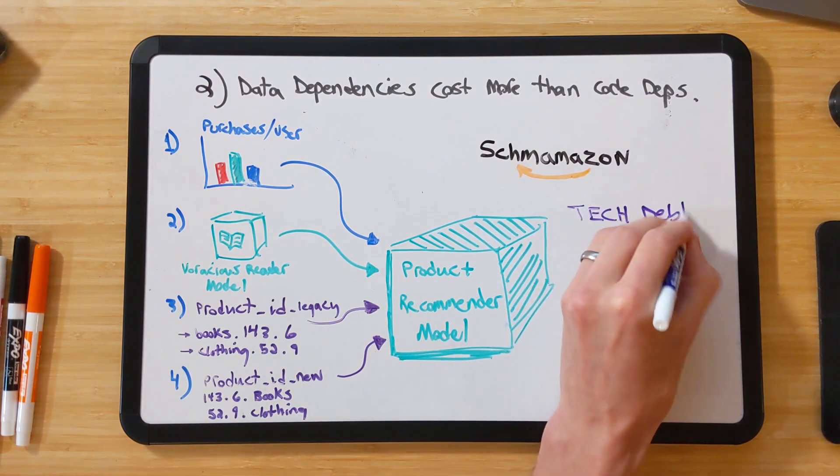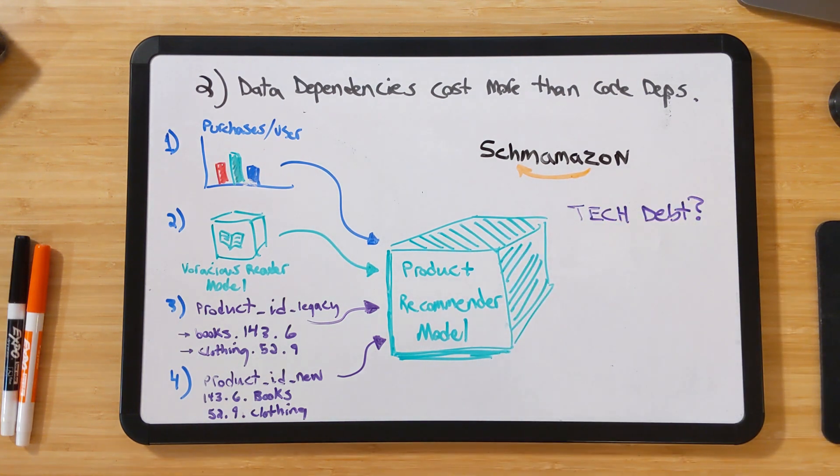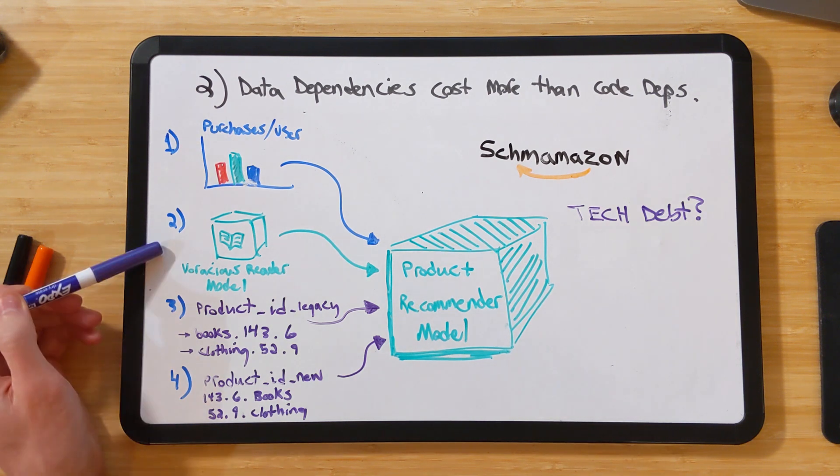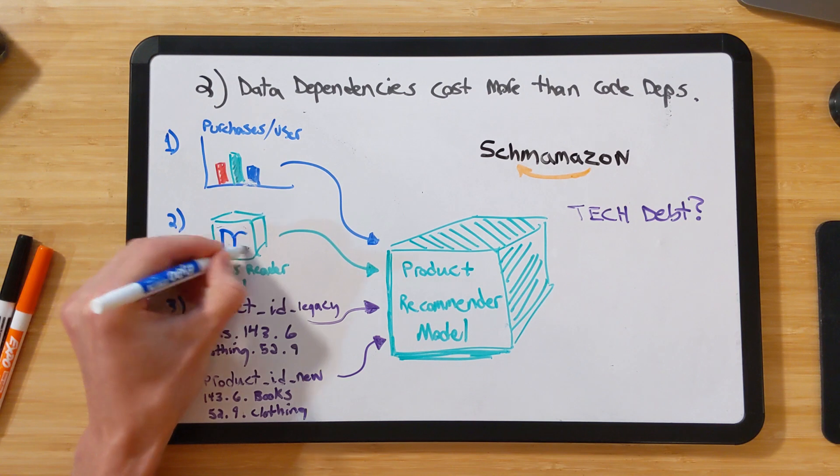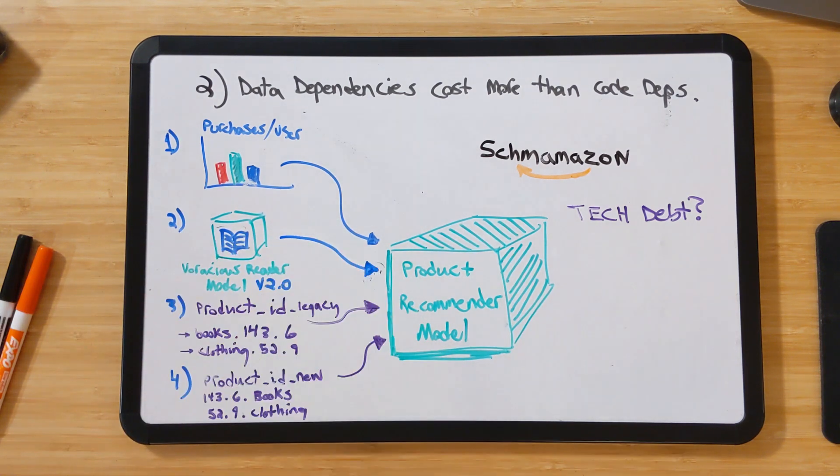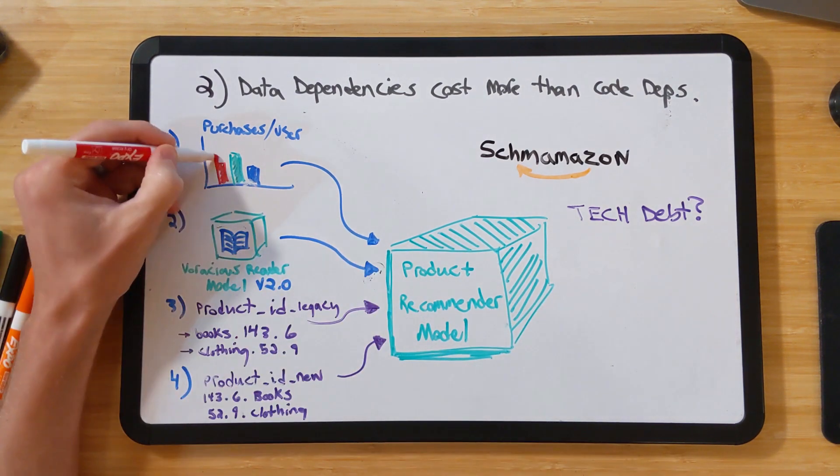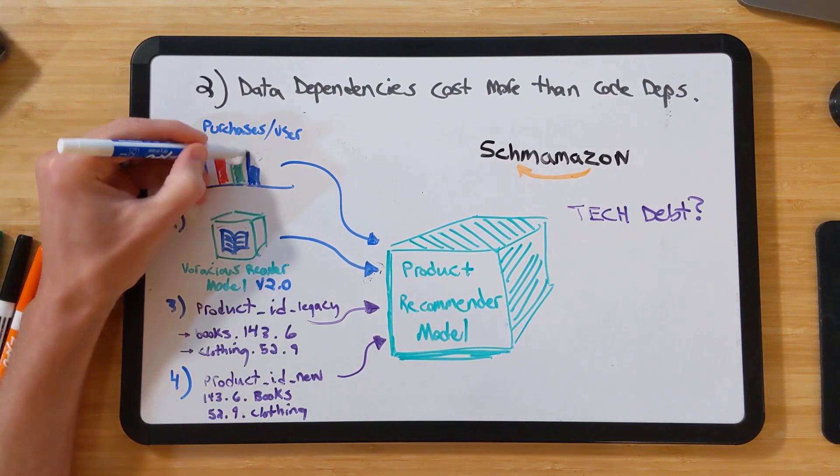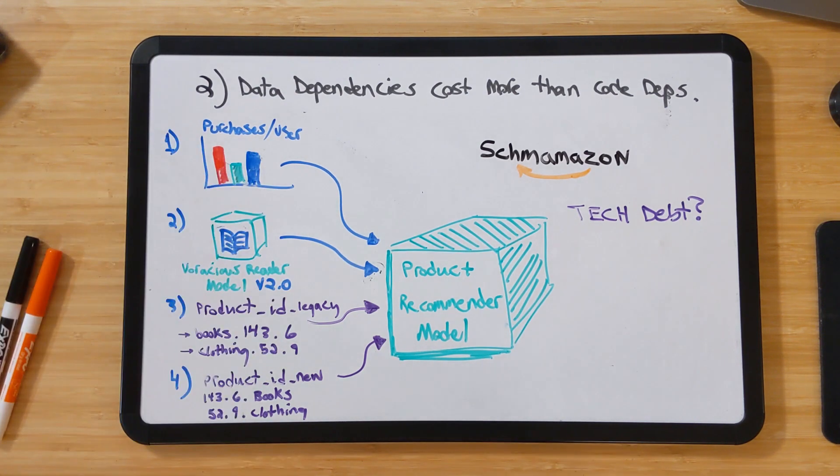Now, how do these signals represent potential sources of technical debt? Let's imagine a few cases. That upstream machine learning model might be updated, modifying the input signal. The general user base of the site might drift over time as the marketing emphasis shifts from book sales to one more focused on clothing and or electronics.